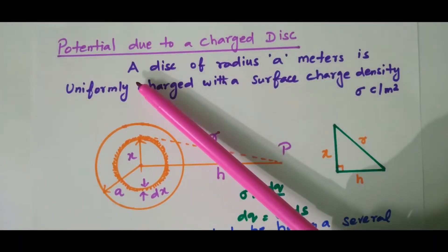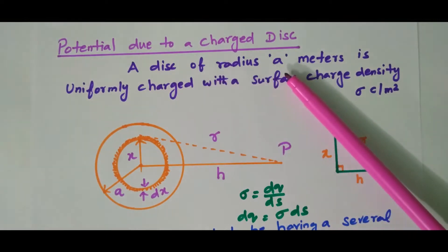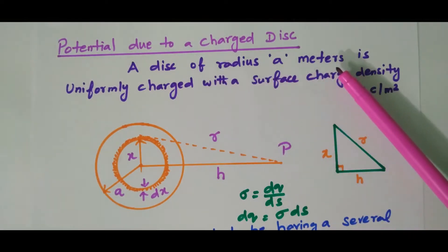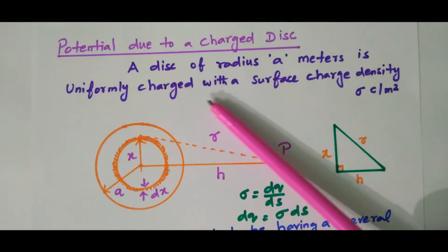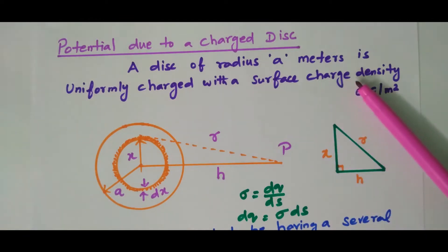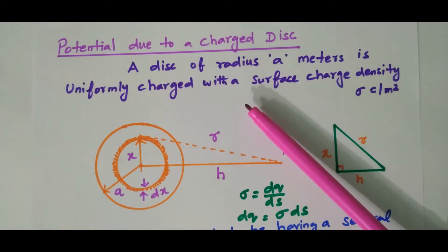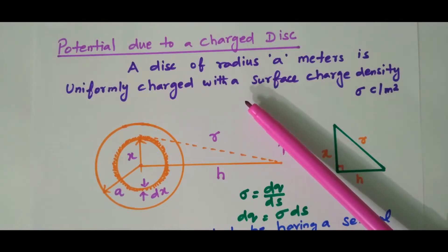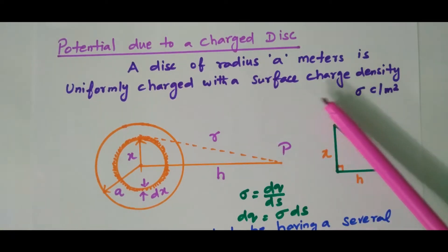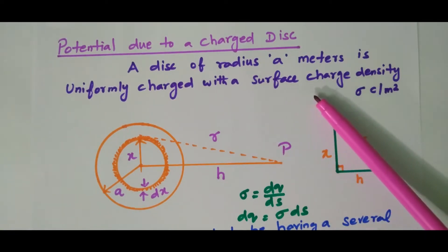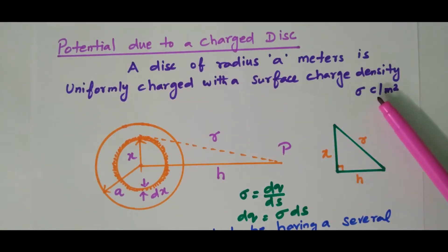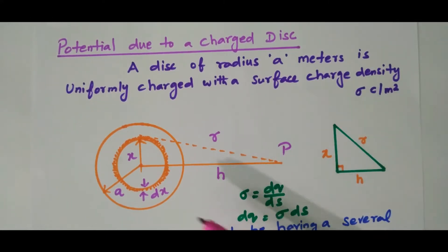We have a disk of radius A meters, uniformly charged with a surface charge density of sigma coulomb per meter square. This charged disk is nothing but like a compact disk, CD. The charges are available on the entire surface, so we are using surface charge density sigma coulomb per meter square.